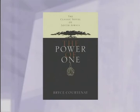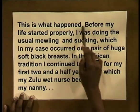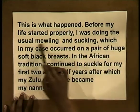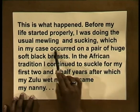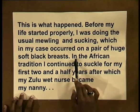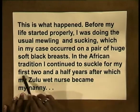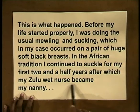So far we've looked at introductions from an Australian and then an American novel, so it's only fitting that now we look at a South African one. Bryce Courtney's novel, The Power of One, is a powerful story about a young boy's struggle to obtain individuality in South Africa in the 1940s against a backdrop of racial hatred and conflict. The story begins with a description of the central character's first few years. 'This is what happened. Before my life started properly, I was doing the usual mewling and sucking, which in my case occurred on a pair of huge soft black breasts. In the African tradition, I continued to suckle for my first two and a half years, after which my Zulu wet nurse became my nanny.'